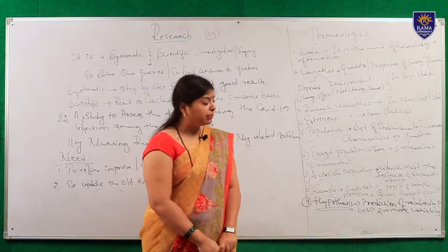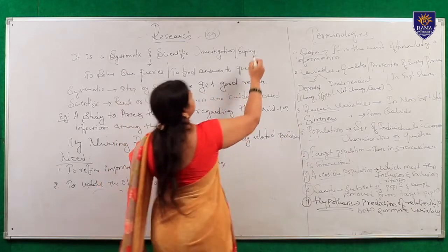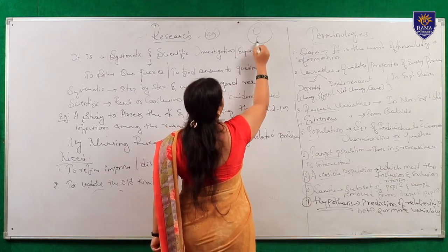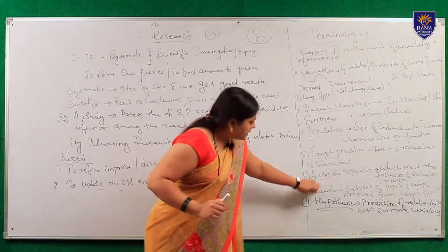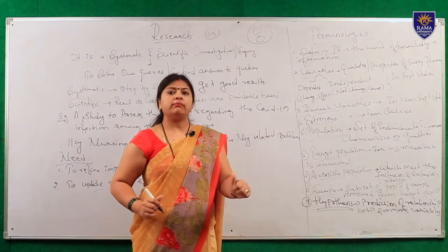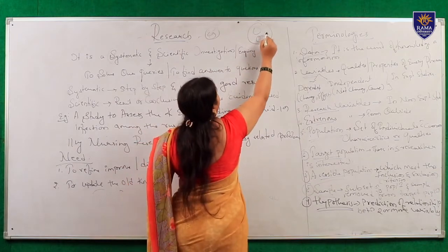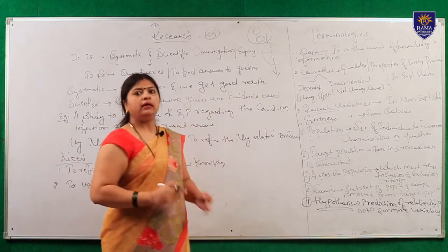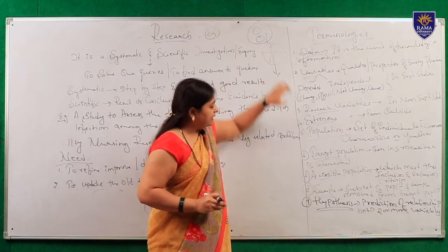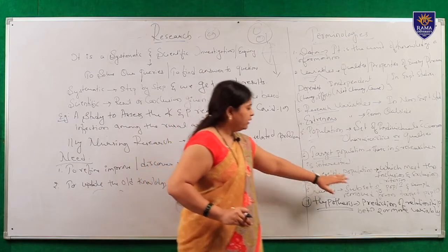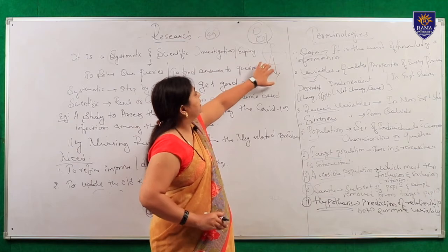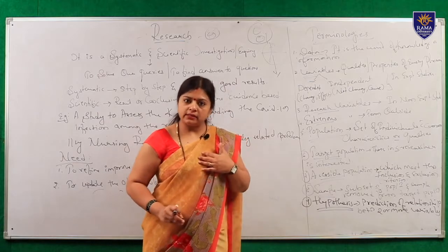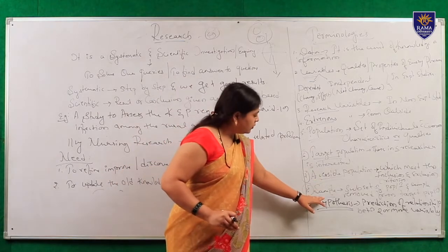Next comes the sample. This was the population; in this population was the target population, and in this target population was the accessible population. From the accessible population next comes the sample. What is sample? Sample is nothing but a subset of the population. From the whole population I am taking one part - that we call a sample, a subset of the population taken from the target population. Those people are known as samples.